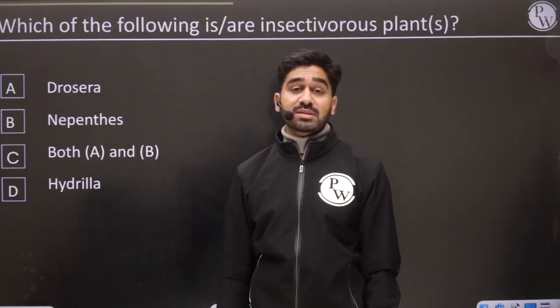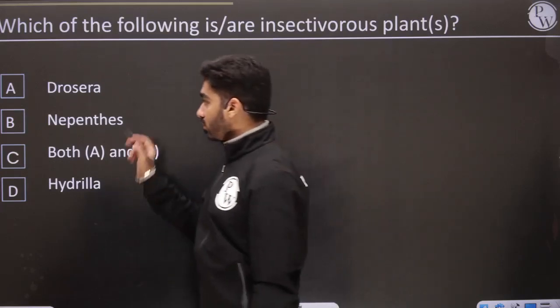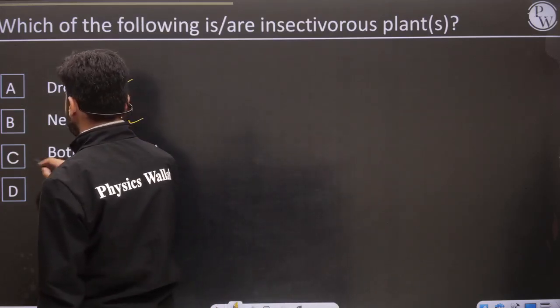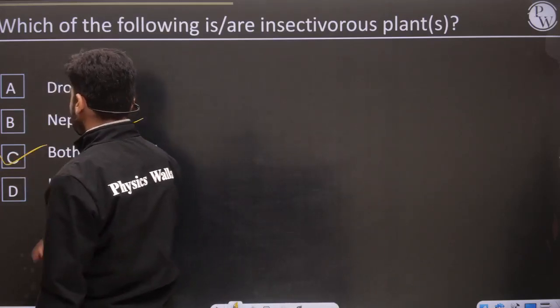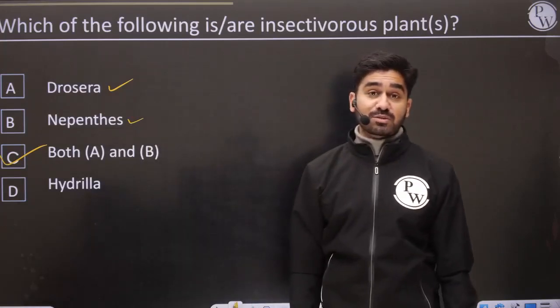Which of the following is insectivorous? Drosera and Nepenthes — both are insectivorous plants.